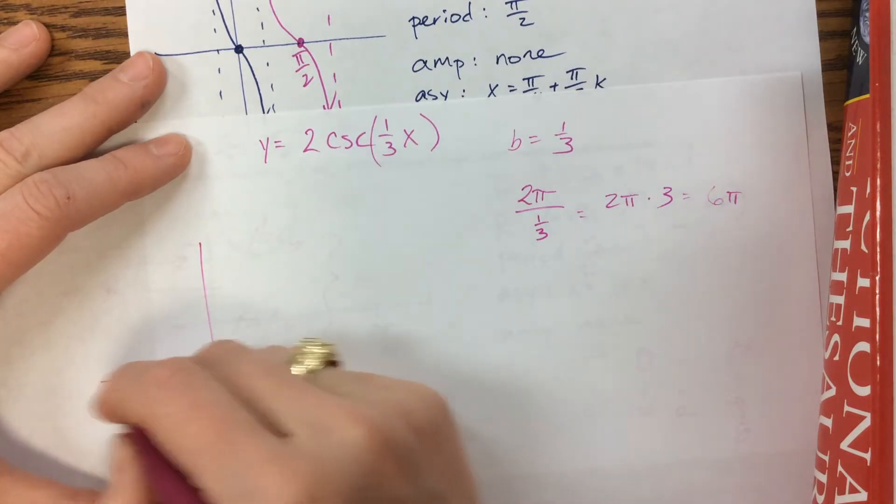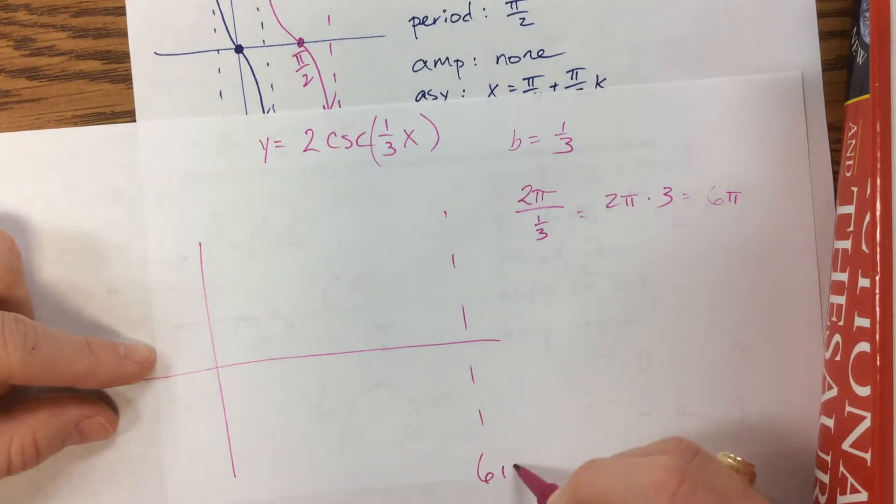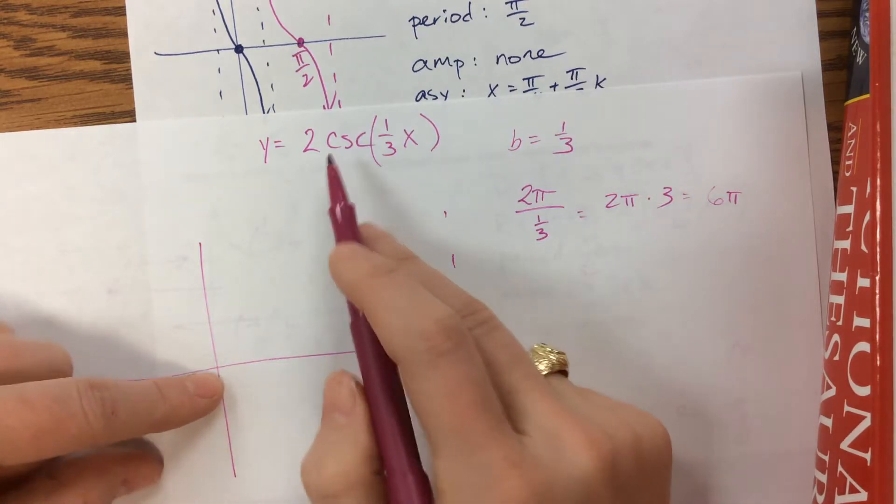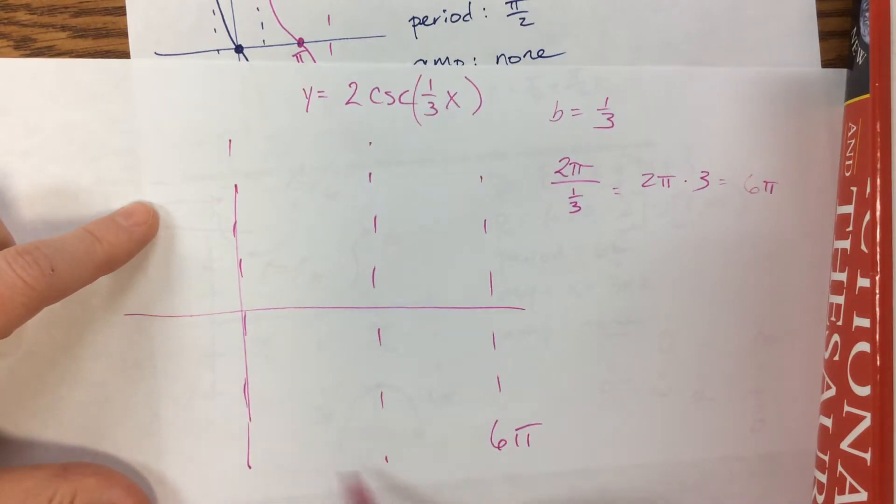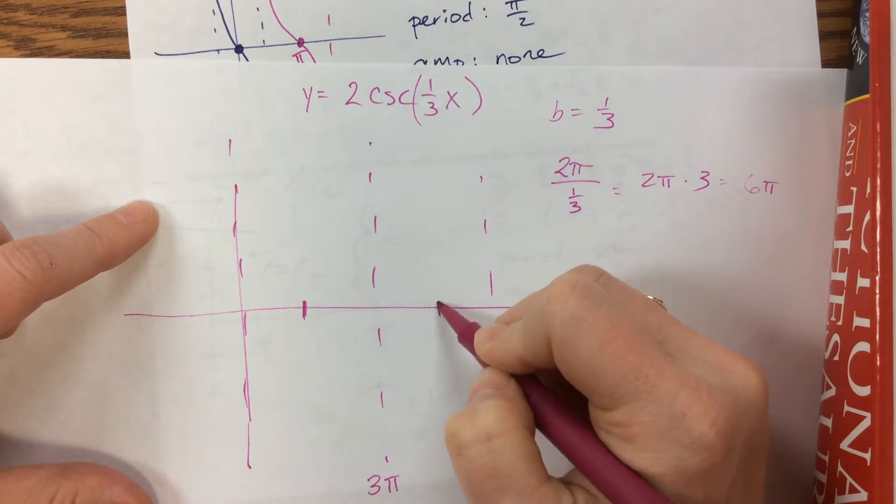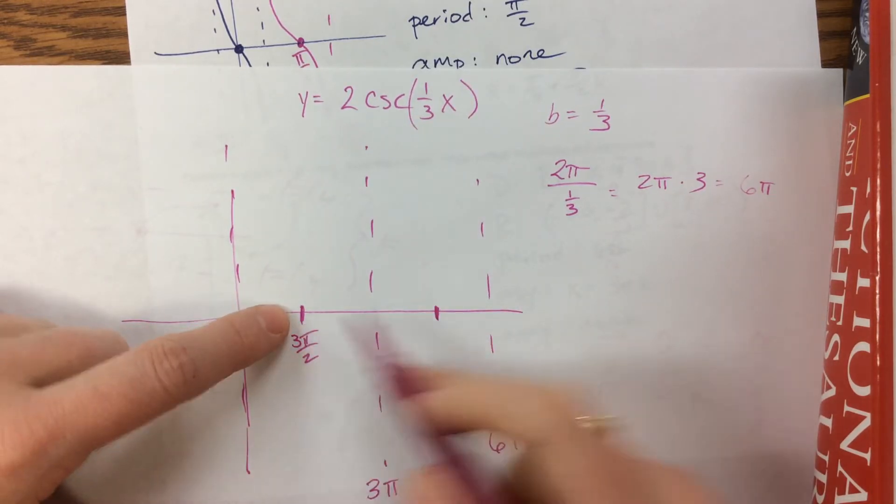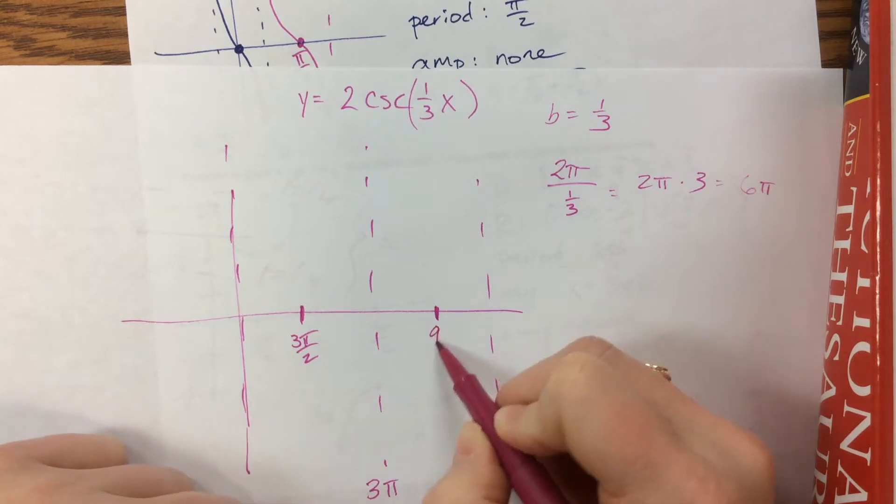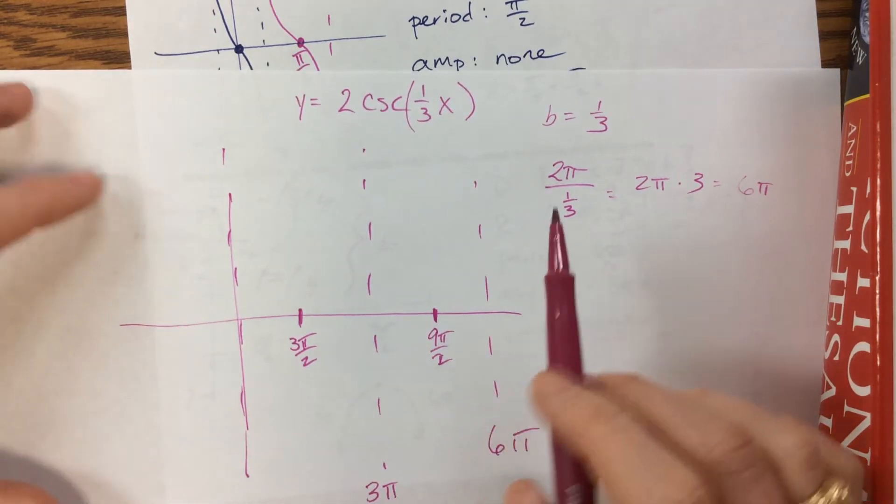So taking that into consideration, I now have, I'm going to do everything I need to do by 6π. Well, cosecant has an asymptote at 0 and an asymptote halfway through. So halfway through from 0 to 6π is 3π. And then we also need to know these values halfway between there. So this is 3π/2. This is 6π/2. This is 9π/2. That's 12π/2.